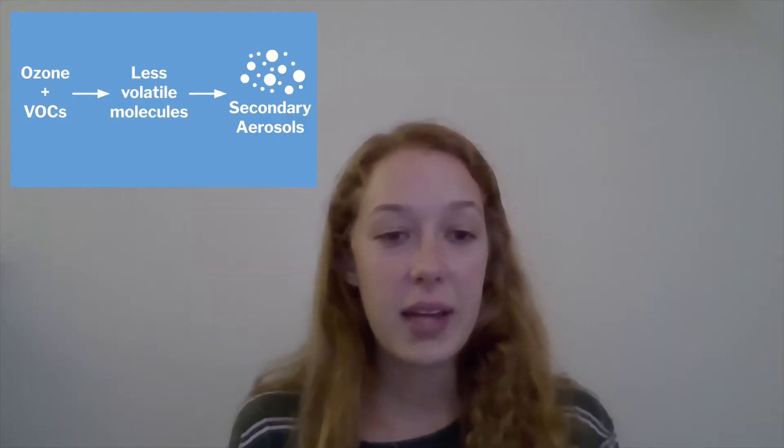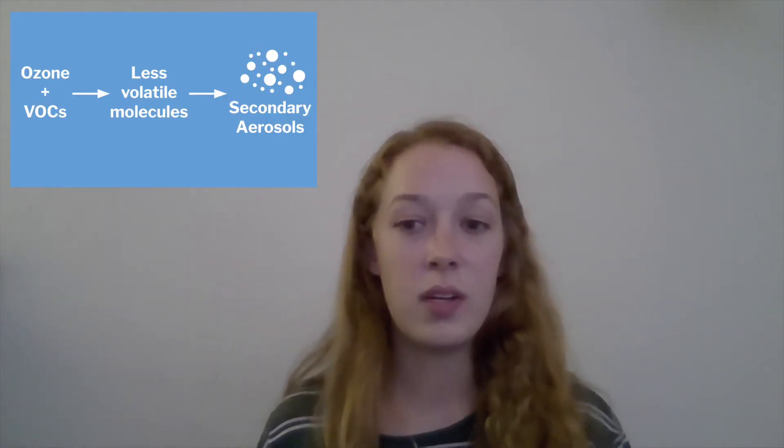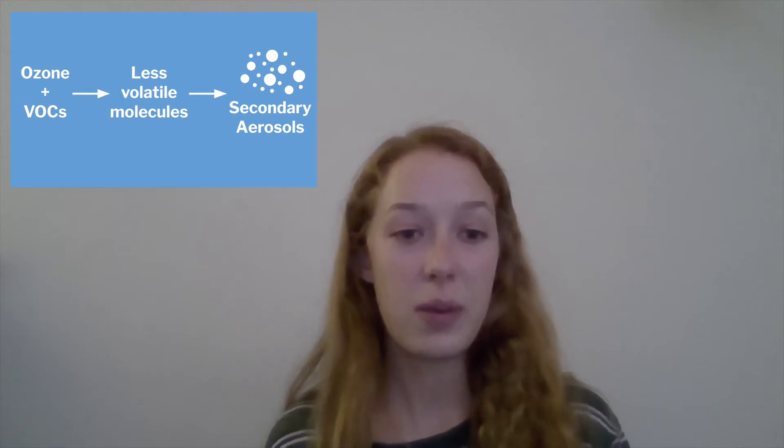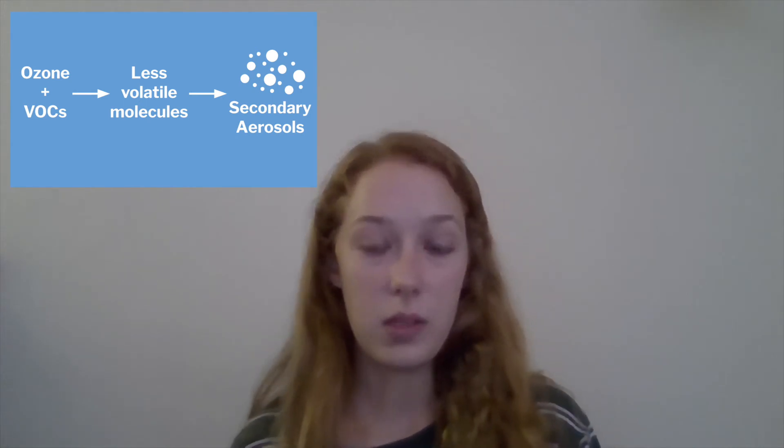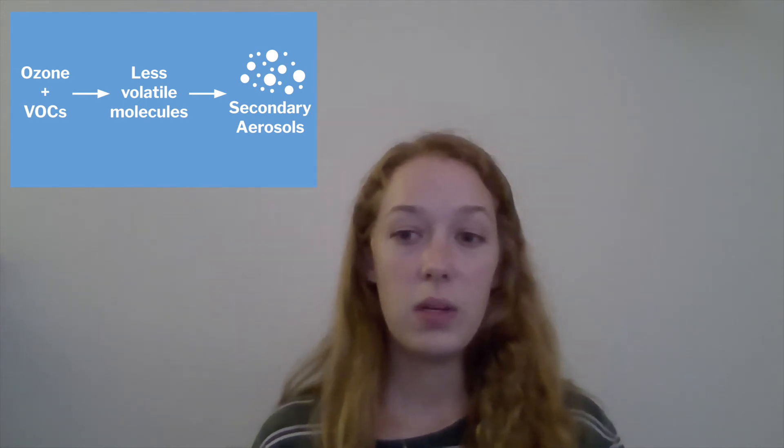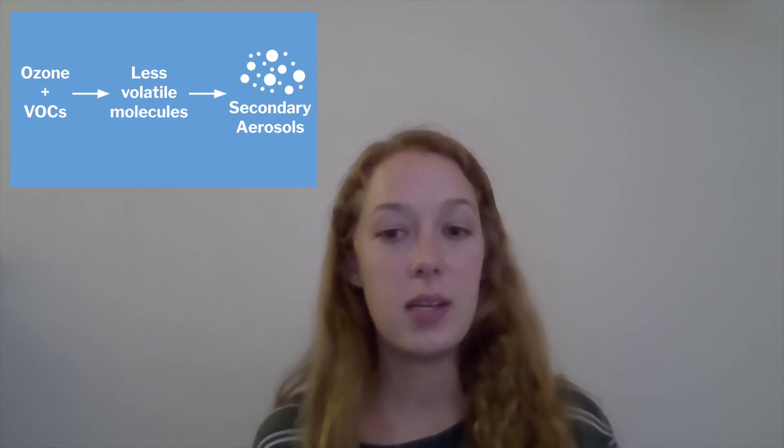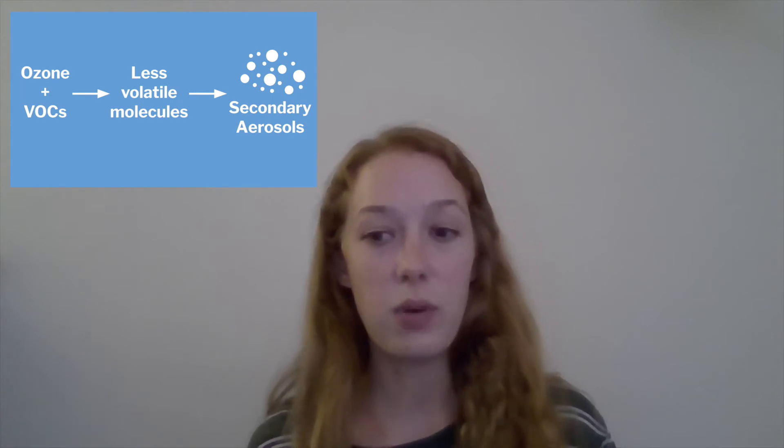Ozone has reacted with the VOCs produced by the orange. And because ozone is a really reactive molecule, it's transformed the VOCs into less volatile molecules. In other words, these molecules that are less volatile now tend to condense into the liquid phase to form small particles, or aerosols. This is what we see with the laser. These new particles that were formed in the experiment are called secondary aerosols — they're formed when gases like limonene from the orange react with molecules like ozone.